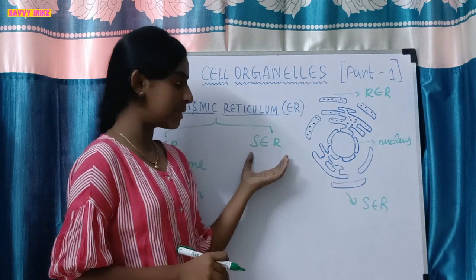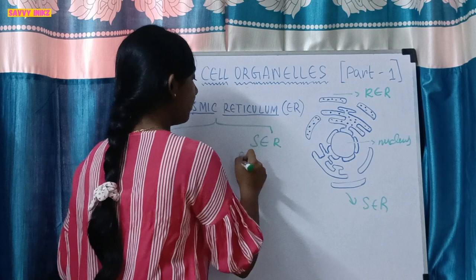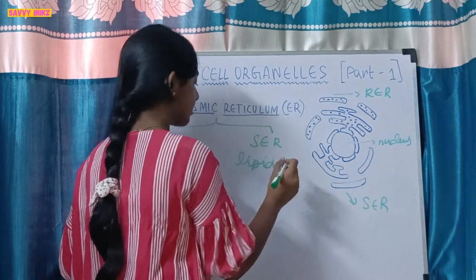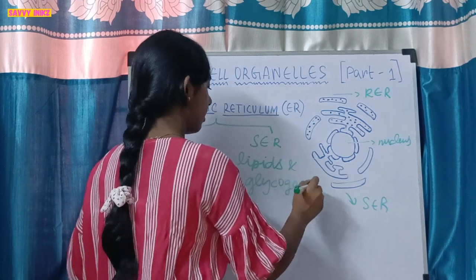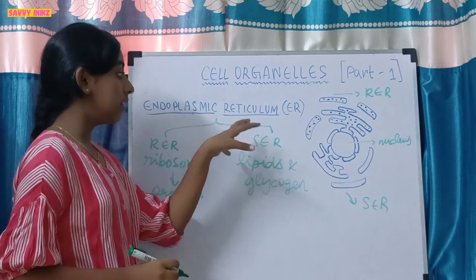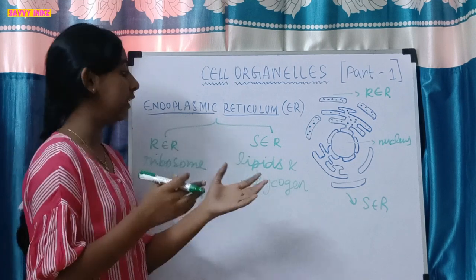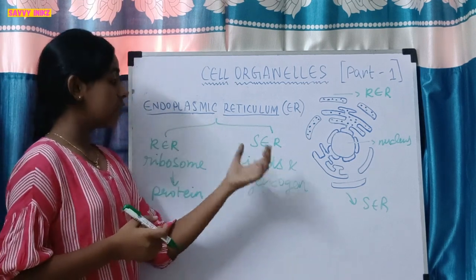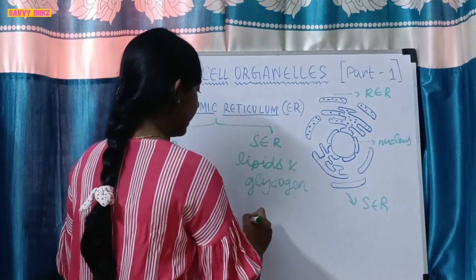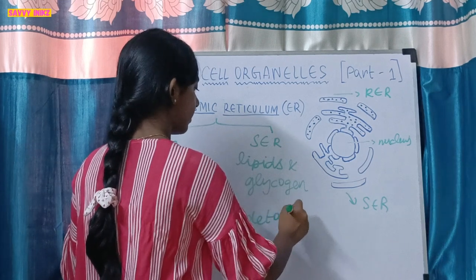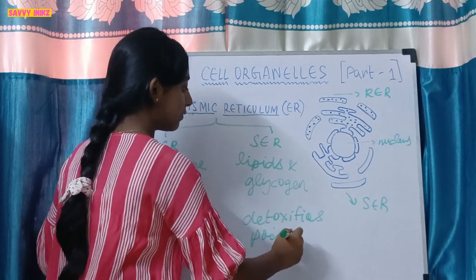Moving on to the smooth endoplasmic reticulum — this involves in the synthesis of lipids. Lipids and fats are the same thing. It also synthesizes glycogen, converting extra glucose into glycogen. Along with this, there is also one main feature of the smooth endoplasmic reticulum: it detoxifies poisons and drugs.